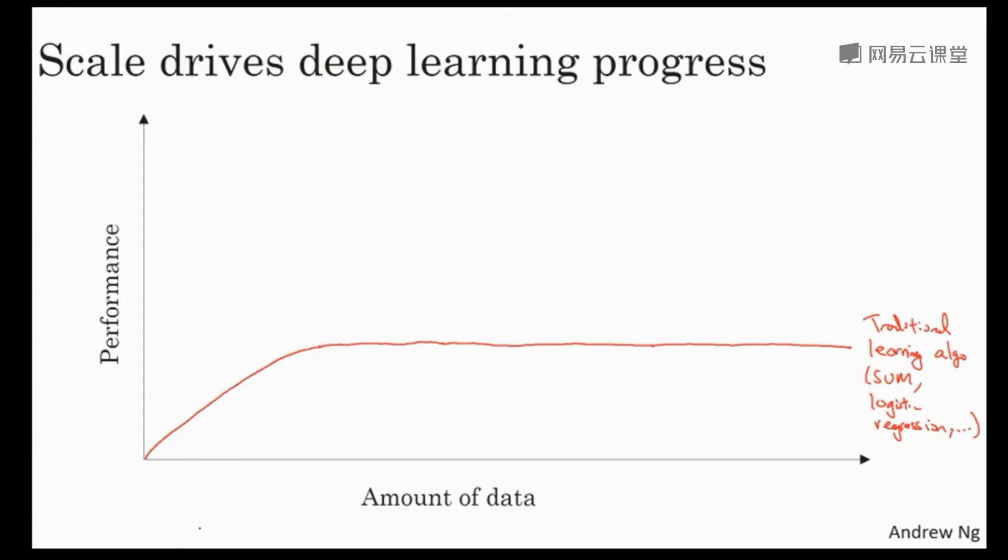And what happened in our society over the last 20 years maybe, is that for a lot of problems, we've went from having a relatively small amount of data to having often a fairly large amount of data. And a lot of this was thanks to the digitization of society, where so much human activity is now in the digital realm. We spend so much time on computers, on websites, on mobile apps, and activities on digital devices creates data. And thanks to the rise of inexpensive cameras built into our cell phones, accelerometers, all sorts of sensors in the internet of things, we've been collecting more and more data.